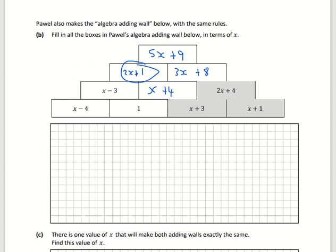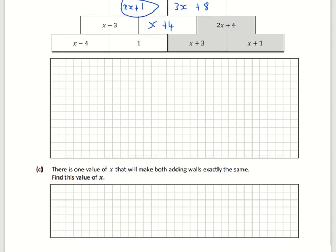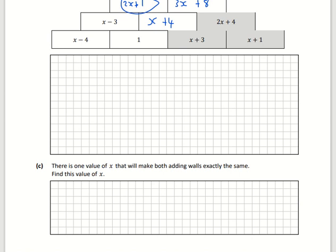So we just have to keep them separate each time. You can't add something with x beside it to just a normal number. However, there is one value of x that will make both of them the same.